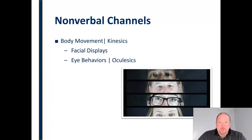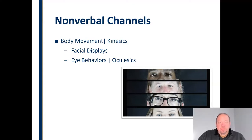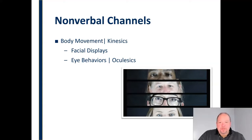Our eye behaviors are another nonverbal channel. Bear in mind that this can vary from culture to culture — what is appropriate or what that eye behavior means is going to vary. We pay attention to where people are looking when we're speaking to them, whether they're making direct eye contact, and then interpret what that means. We read into a lot of different things — are they being truthful or not — all based on their eye behaviors, or what we call oculesics.